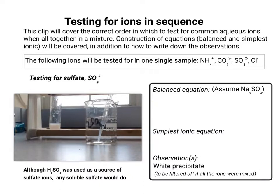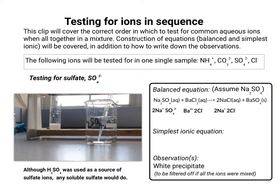For the balanced equation, we'll assume our sulfate source is sodium sulfate. The balanced equation uses barium chloride and sodium sulfate. To get the simplest ionic equation, take all the aqueous species — sodium sulfate, barium chloride, and sodium chloride — turn them into their ions, and cancel the spectator ions on either side, not forgetting state symbols. The simplest ionic equation shows how the precipitate — barium sulfate — is made.